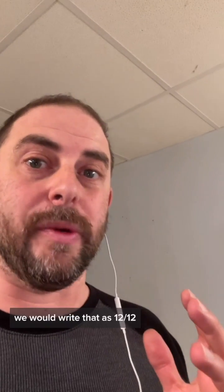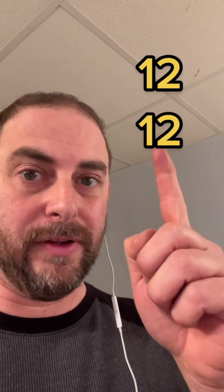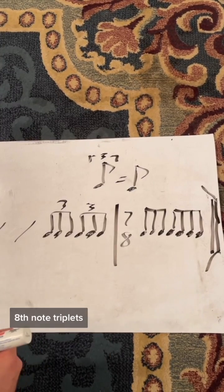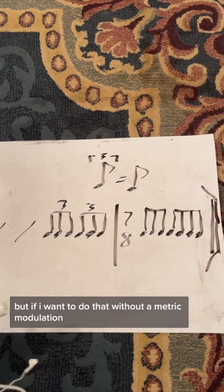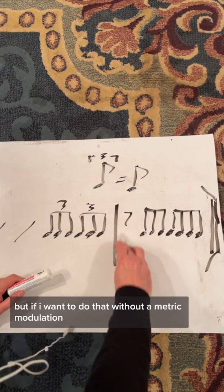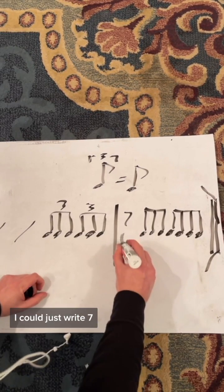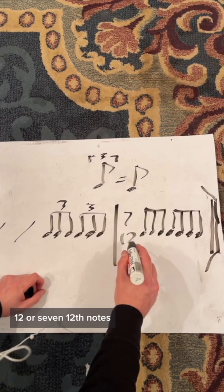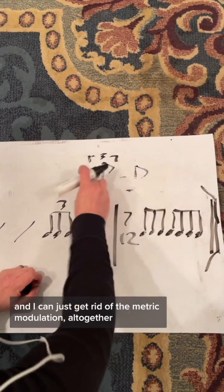So as an irrational time signature, we would write that as twelve, twelve. This example, I don't need twelve eighth note triplets, I only need seven. But if I want to do that without a metric modulation, I could just write seven, twelve, or seven twelfth notes, and I could just get rid of the metric modulation altogether.